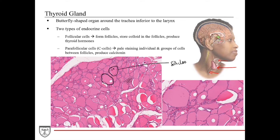At a higher magnification of the thyroid, we can appreciate the follicular cells lining the follicles with colloid in the middle. Some colloid appears to have dried out and shrunk away — those non-staining circular structures are artifacts. Between the follicles, we see aggregates of pale-staining cells — these are the parafollicular cells, which can also be a component of the follicular lining while retaining their pale-staining nature. The thyroid hormones play an incredibly important role in regulating metabolism, temperature regulation, and cognitive processing.